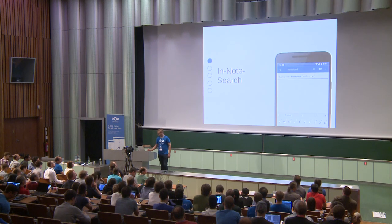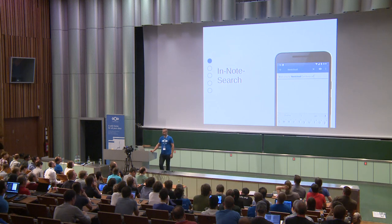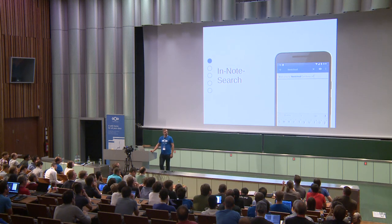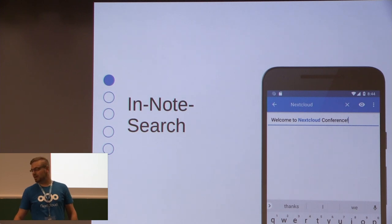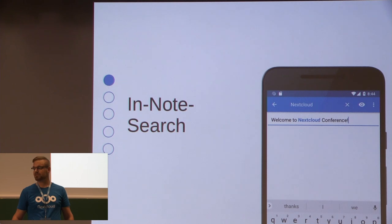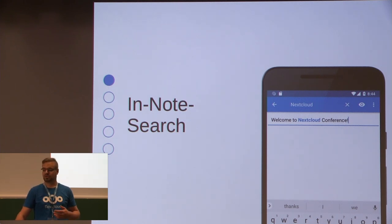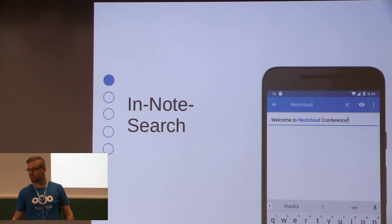First of all, you can already search through all your notes by content. And Mario did a pull request for an in-note search, so you can open a single note and search for a specific term. Currently the search term is getting highlighted, and we can build on top of this pull request and enhance it — for example, to add a previous and next button like you know it from Firefox search.